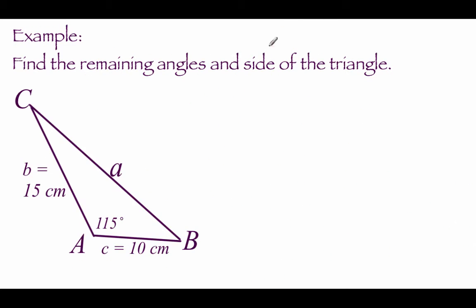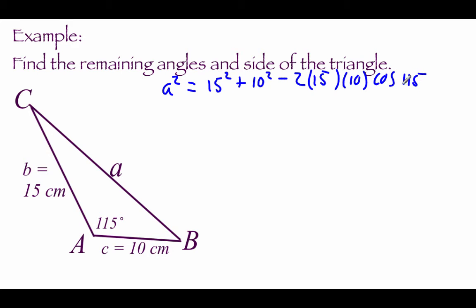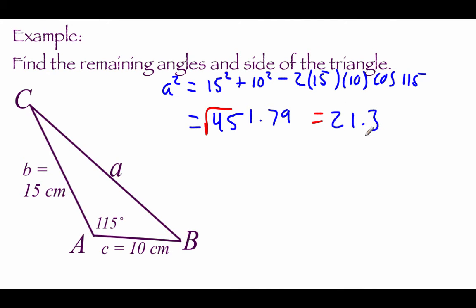This example is very similar to the last one. Starting by finding side A: A squared equals B squared (15 squared) plus C squared (10 squared), minus 2 times 15 times 10 times the cosine of 115 degrees. Typing the right-hand side into our calculator gives 451.79. Taking the square root, we get about 21.3 for side A.